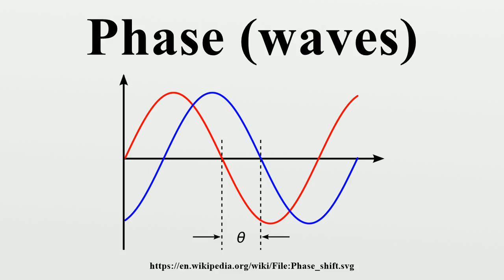If the phase difference is 180 degrees, then the two oscillators are said to be in antiphase.